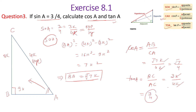Correcting: tangent of A equals opposite upon adjacent. The opposite BC is 3k and the adjacent AB is root 7k. The k cancels, giving tan A equals 3 upon root 7.